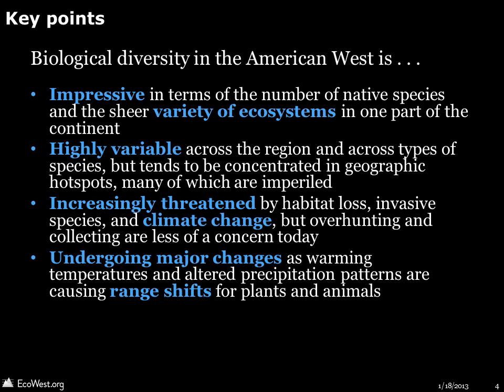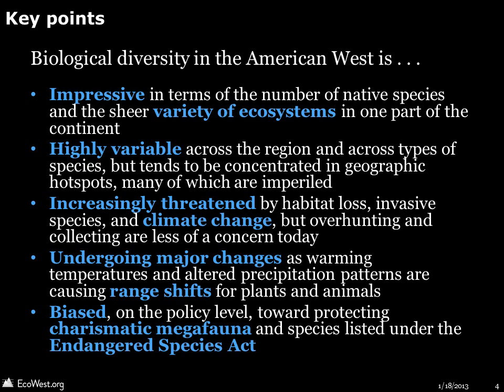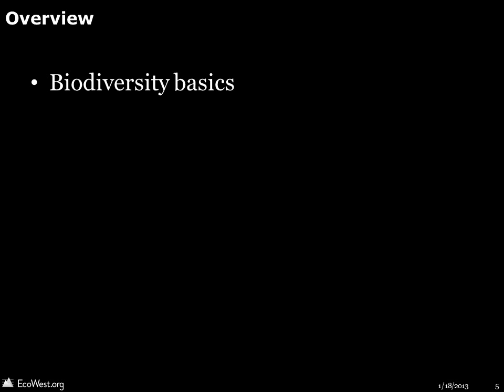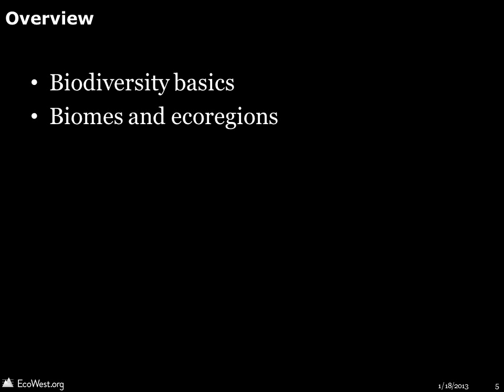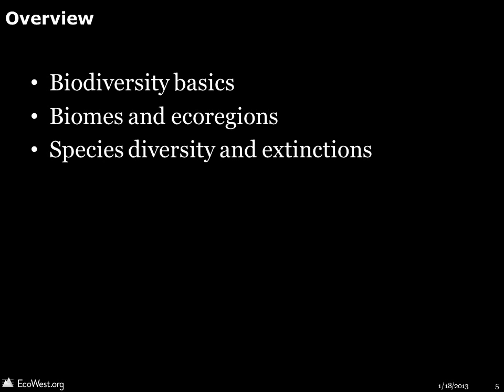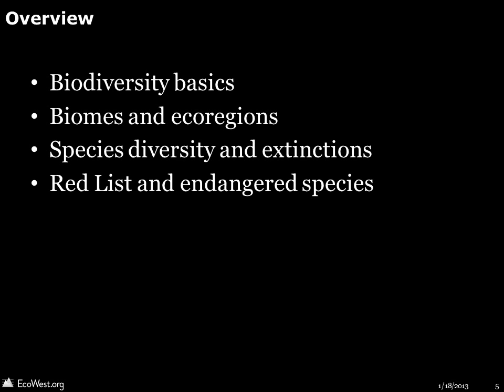Biodiversity is undergoing major changes as warming temperatures and altered precipitation patterns are causing range shifts for plants and animals. It is also biased on the policy level toward protecting charismatic megafauna and species listed under the Endangered Species Act. This presentation is divided into four sections: the basics of biodiversity, biomes and ecoregions, species diversity and extinctions, and finally imperiled species on the IUCN's red list and those protected by the Endangered Species Act.